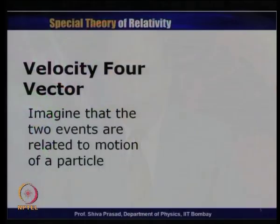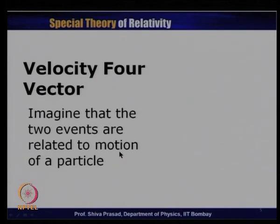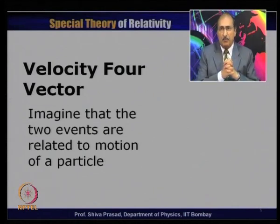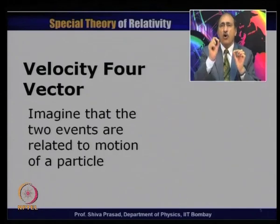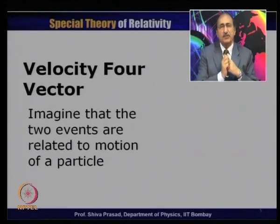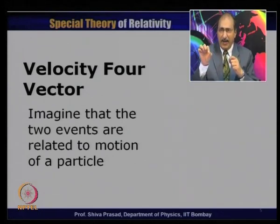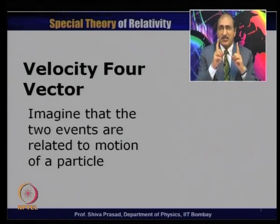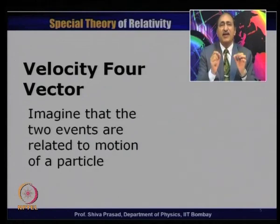Let us go to the velocity four-vector. We imagine two events related to the displacement of a particle in real space. A particle is found at a given position — this is the first event. The same particle, displaced to a different position at a different time in the same frame, is the second event. So the two events are not arbitrary, but specifically related to the movement of a single particle in a given frame of reference.